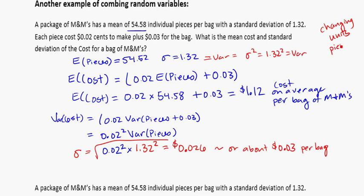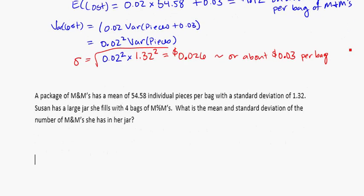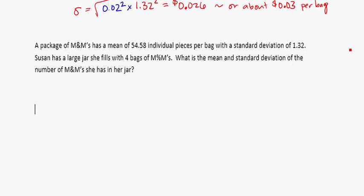So in this case again just to remind you here we were changing units. I went from pieces to cost so we used the formula straight as they were in the book. And this problem here, let's carry on with it. A package of M&Ms has that mean 54.58 per bag with a standard deviation of 1.32. Susan has a large jar she fills with 4 bags of M&Ms. What is the mean and standard deviation of the number of M&Ms she has in her jar?